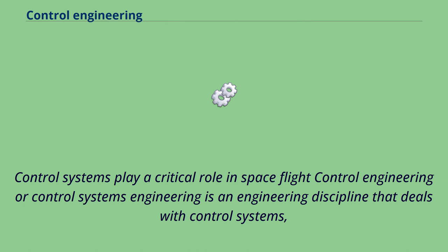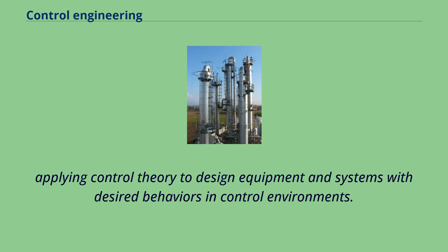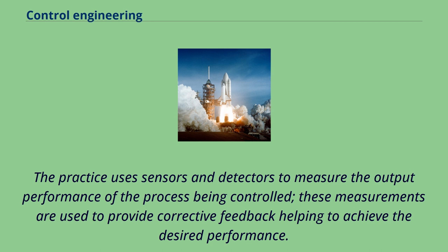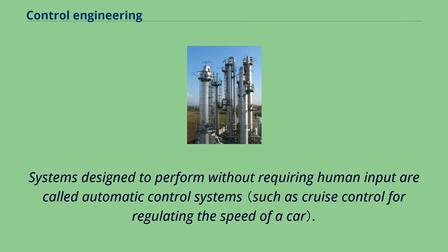Control systems play a critical role in space flight. Control systems engineering is an engineering discipline that deals with control systems, applying control theory to design equipment and systems with desired behaviors. The discipline overlaps and is usually taught along with electrical engineering and mechanical engineering. The practice uses sensors and detectors to measure the output performance of the process being controlled. These measurements provide corrective feedback to achieve desired performance. Systems designed to perform without human input are called automatic control systems.